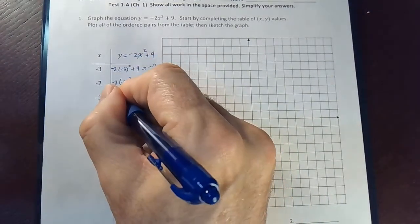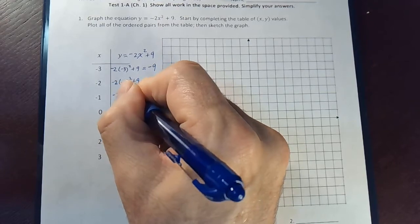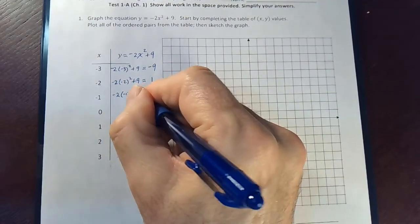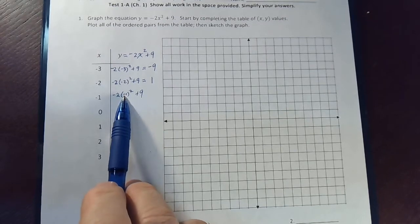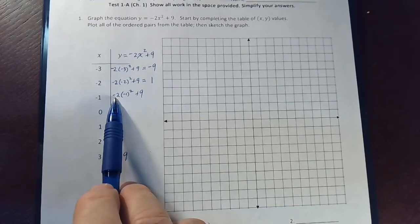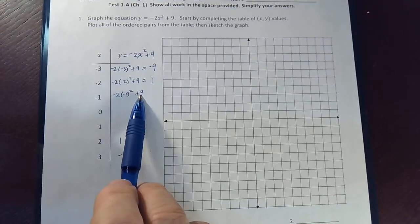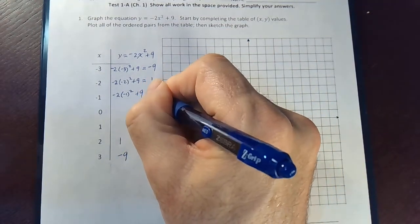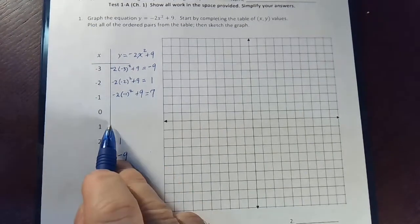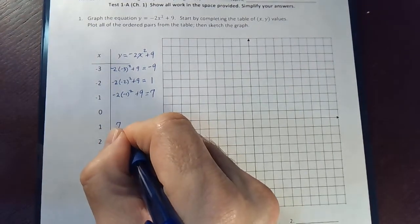Now let's plug in a negative 1. Negative 2 times negative 1 squared plus 9 is going to give me—negative 1 squared is 1, times negative 2. So negative 2 plus 9. That's like 9 minus 2, which is 7. So if I plug a positive 1 in, I'm also going to get a 7.